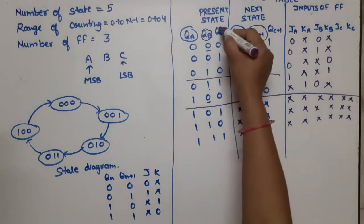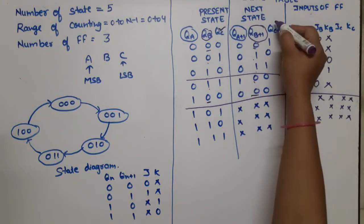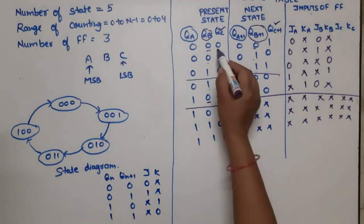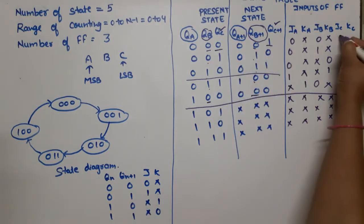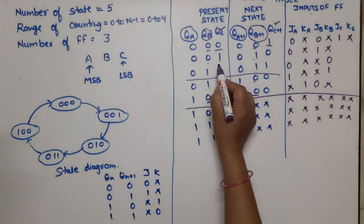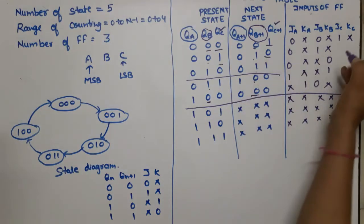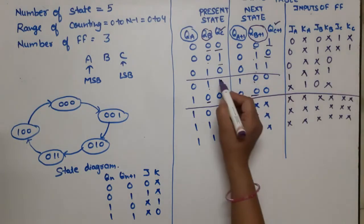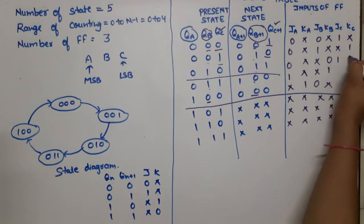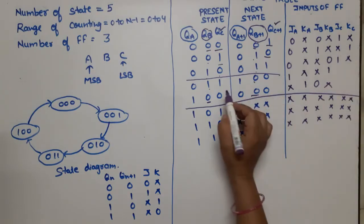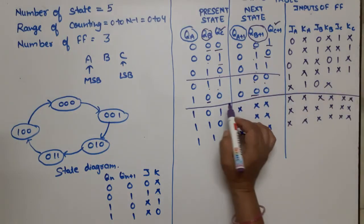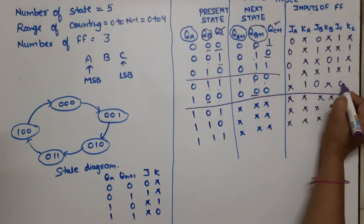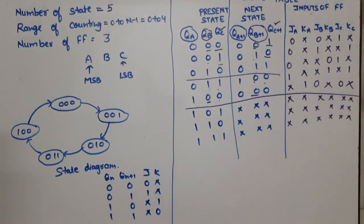For JC and KC, we look at QC and QC+1. The sequence is: 0→1 gives JC=1, KC=X; 1→0 gives JC=X, KC=1; 0→1 gives JC=1, KC=X; 1→0 gives JC=X, KC=1; and the last state 4 has 0→0, giving JC=0, KC=X. This completes the state table for the mod-5 synchronous up counter using JK flip-flops.